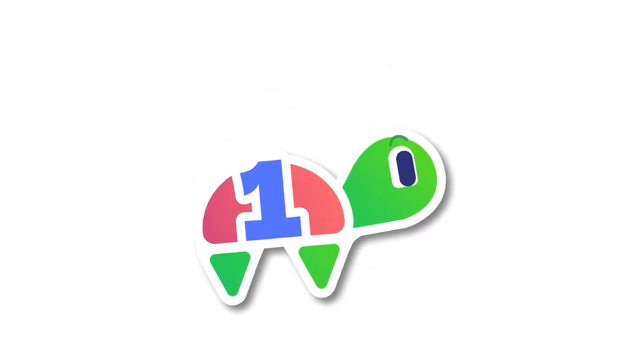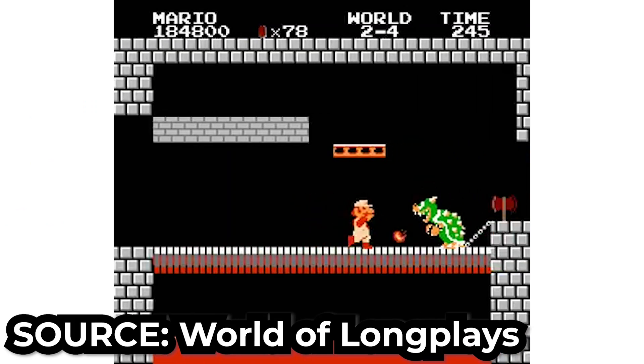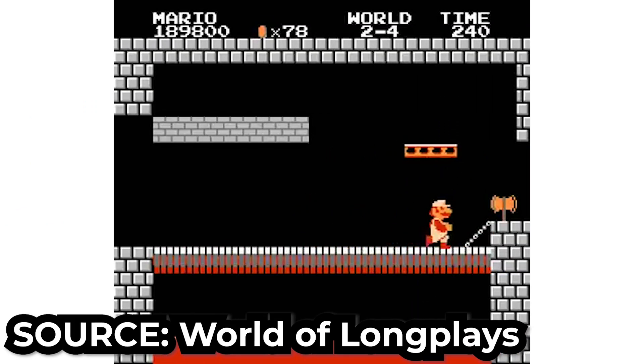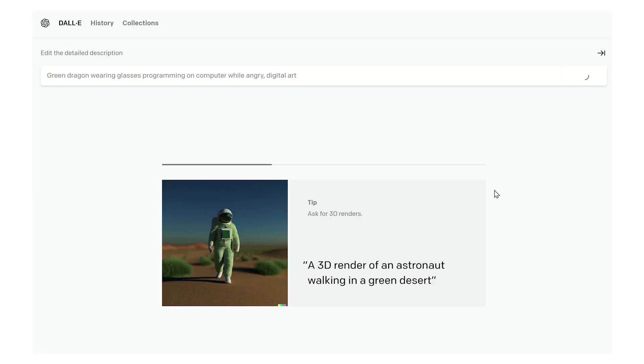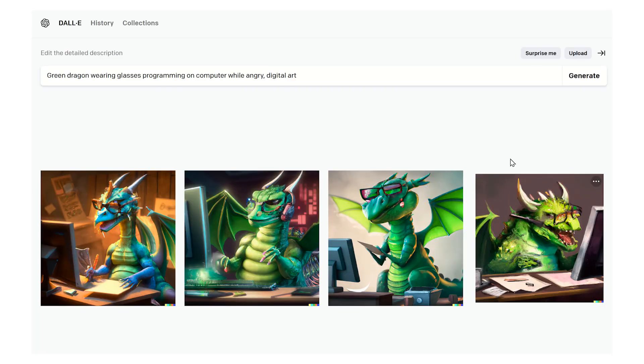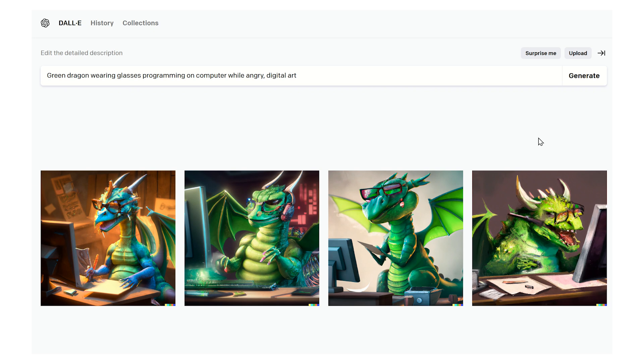It's pretty crazy how far computers have come in less than a century. I mean, this is what video games looked like in 1985, and this is what video games look like now. Also, in just the past year, AI learned how to draw! I didn't see that coming.